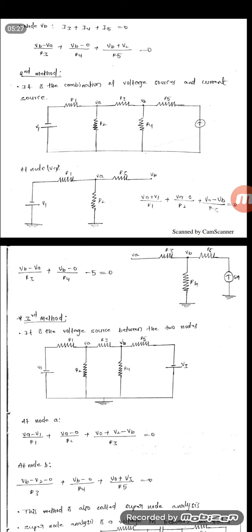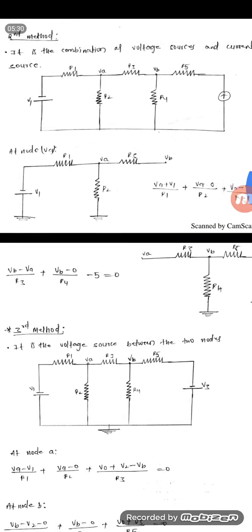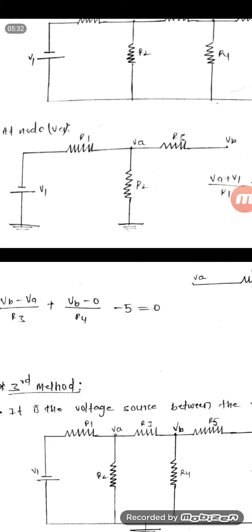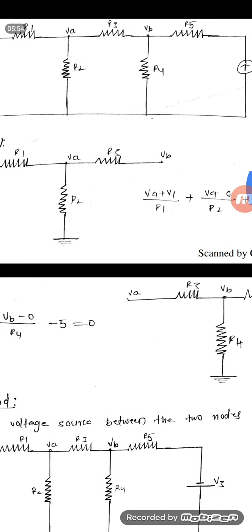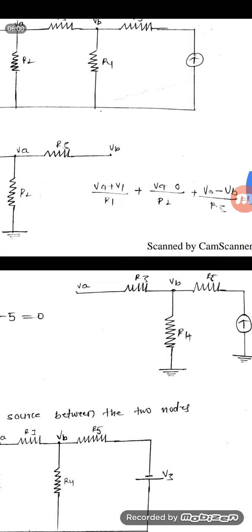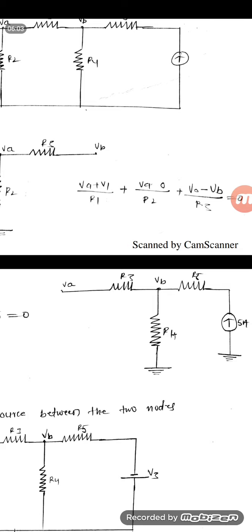Same method. Applying the nodal analysis for node A, again drawing the circuit consisting of elements connected to node A. All currents are assumed to be leaving from the node and all are positive. The first term is (VA − (−V1)) / R1, next VA − 0 by R2, and VA − VB by R3.